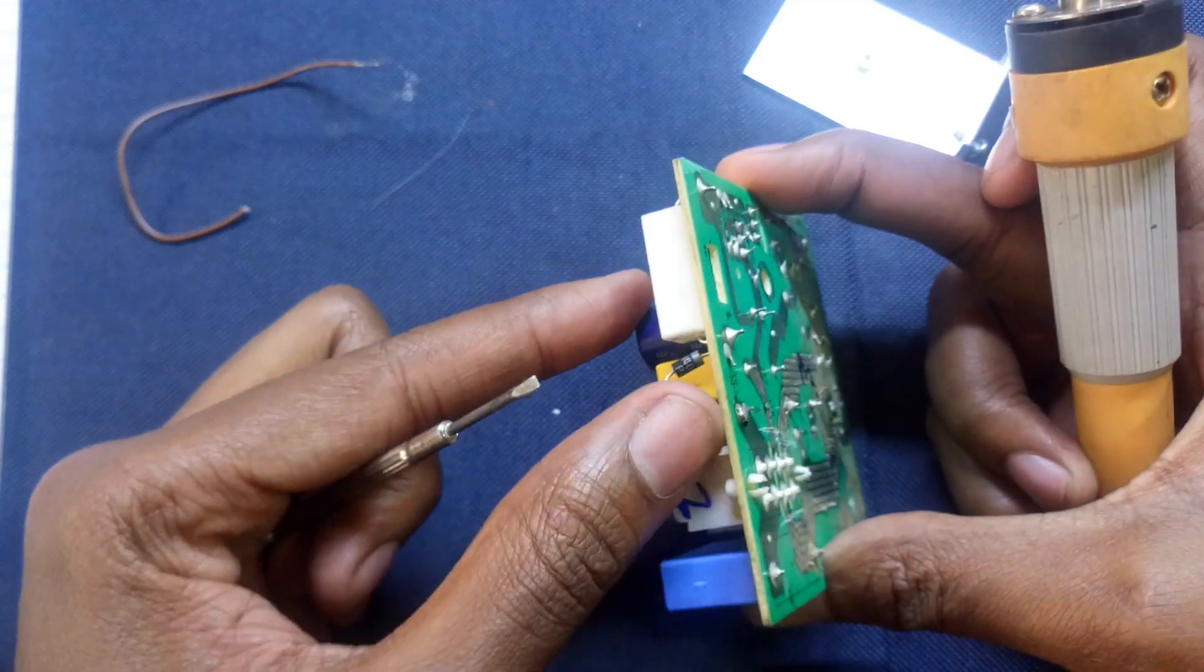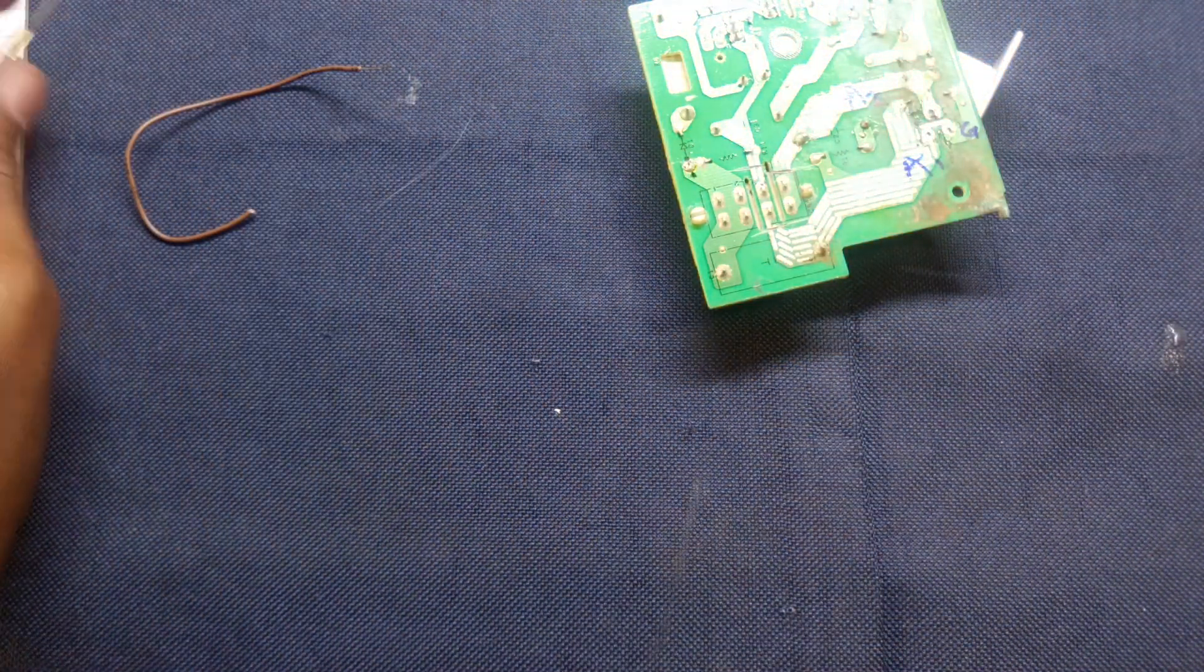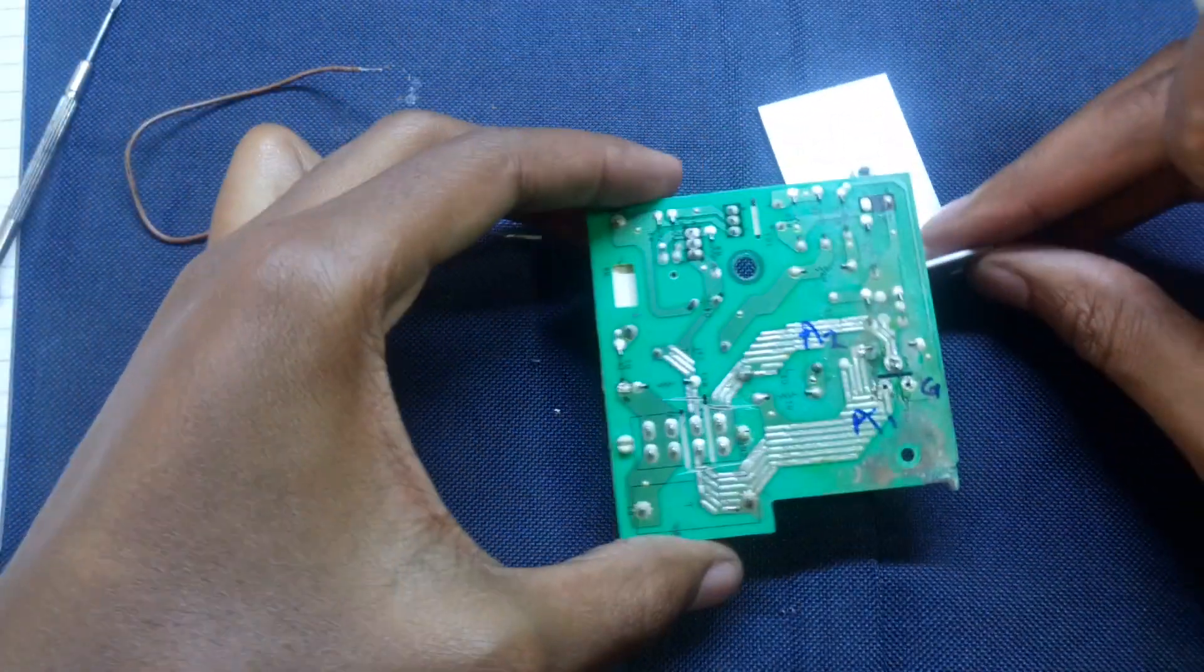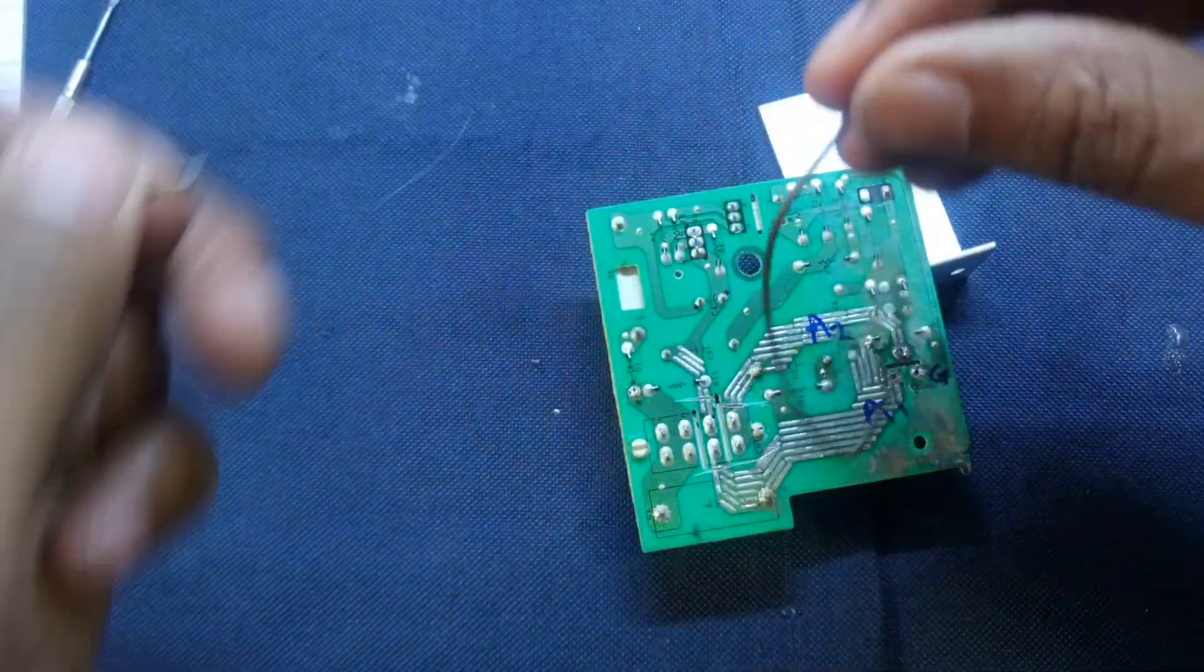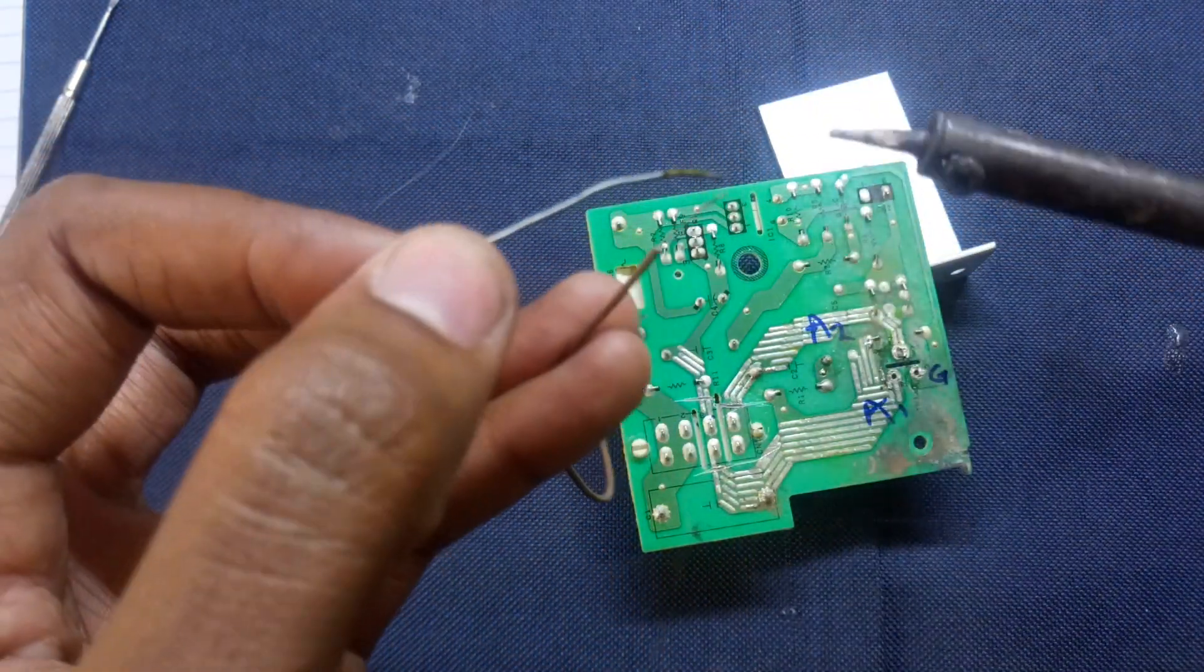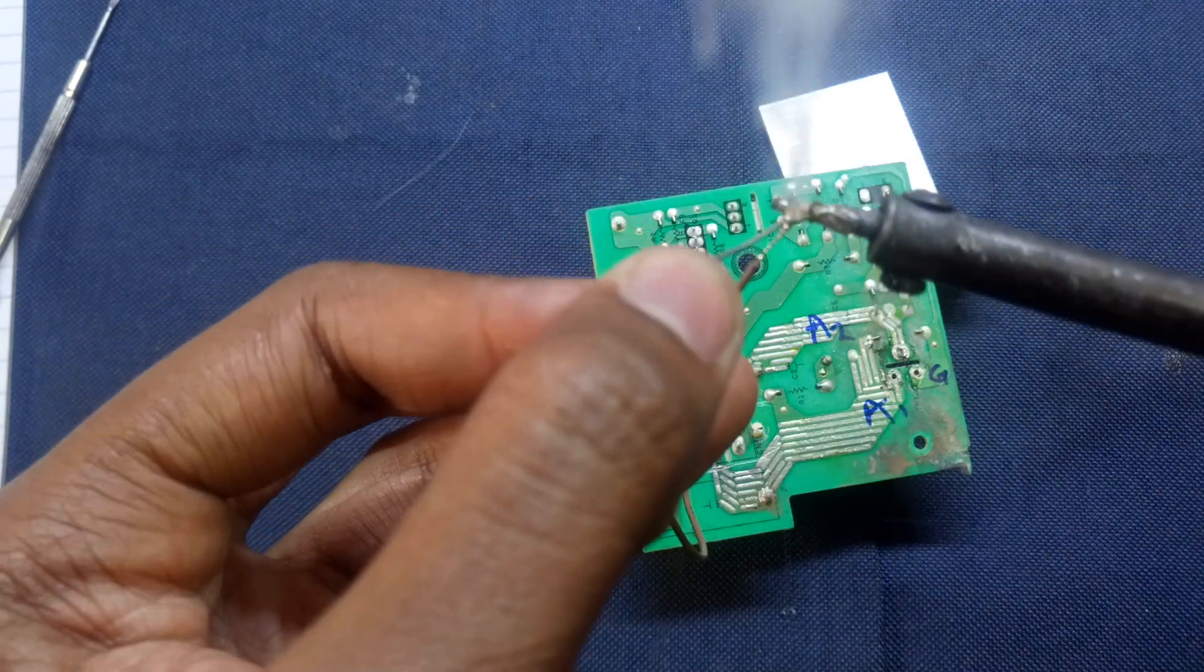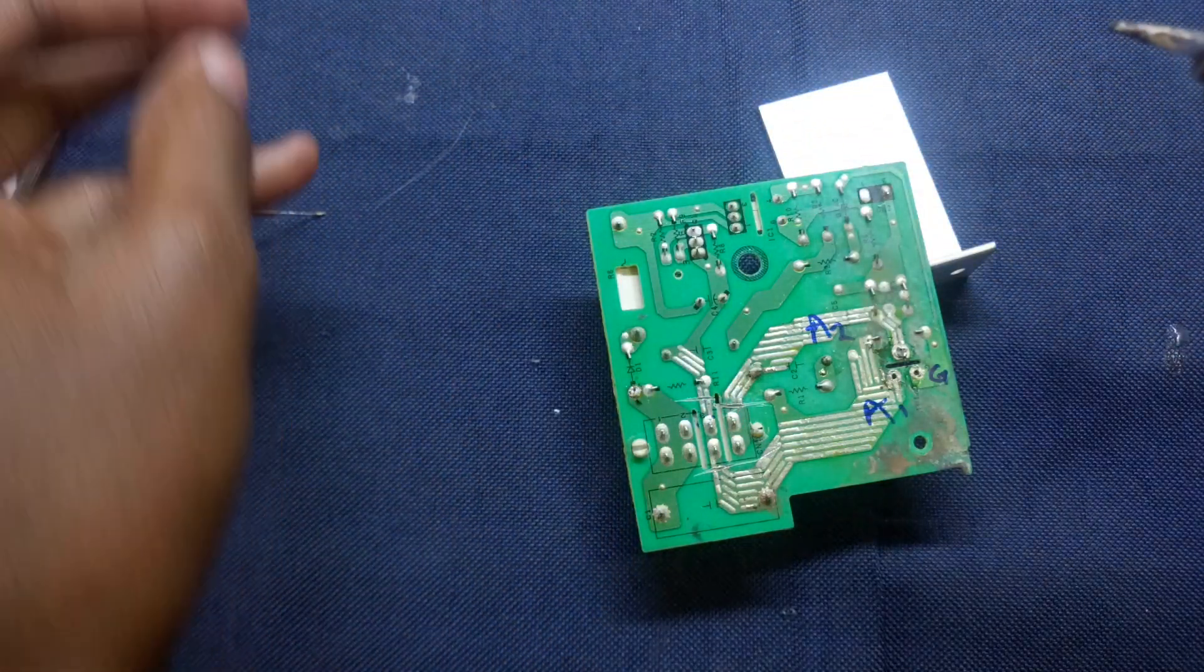Left now is just to solder a connector that will short the A1, or anode 1, and anode 2 terminals of the triac.